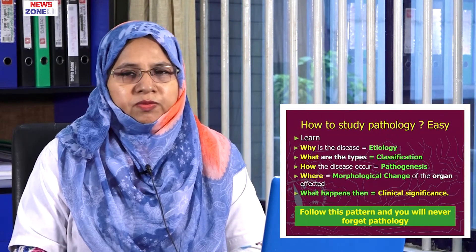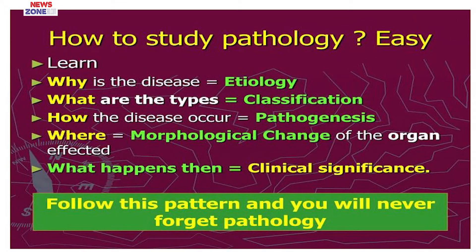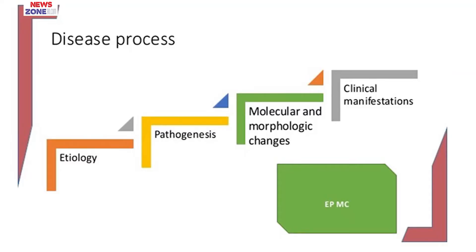Now I will explain the basic steps of studying pathology. First, we have to answer a few questions: Why is there disease? What is the cause? That is called etiology. What are the types of the disease — is it inflammatory, neoplastic, genetic, or else? How does the disease occur? That is pathogenesis. Where do the changes occur — at tissue, organ, or cellular level? And then, what happens? That is the clinical manifestation of disease. Please follow this step-ladder pattern — the mnemonic EPMC: etiology, pathogenesis, molecular and morphologic changes, and clinical manifestations.